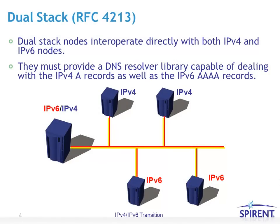Dual stack was defined by RFC 4213. The idea is that nodes would actually be running two different stacks — one for IPv4 and one for IPv6 — and depending on what application and protocol they were using, they would just use one stack or the other. It's actually the most widely spread use of IPv4 to IPv6 transition because it doesn't require any tunneling or translational methods. Of course, it does require all the infrastructure, including DNS resolvers, to support both IPv4 and IPv6 mechanisms.